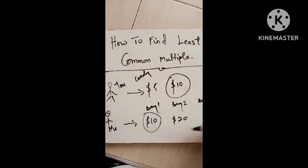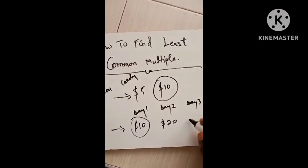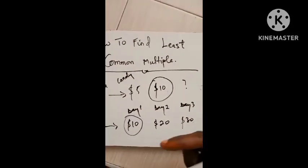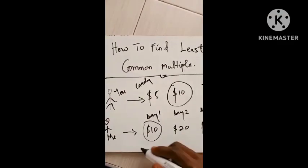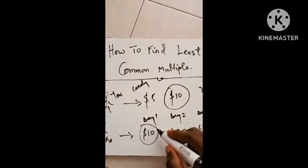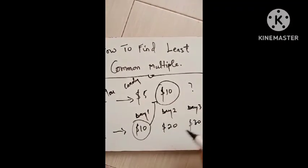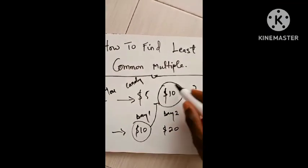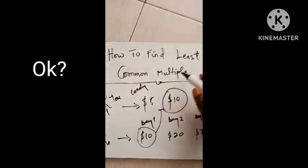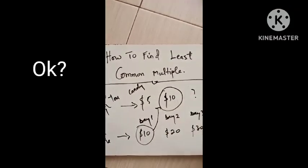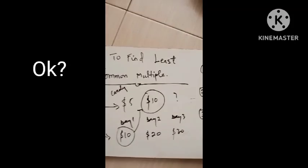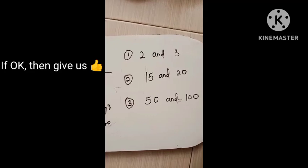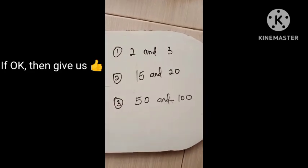If you keep on listing the amounts we are spending, for me day three is going to be thirty dollars. What do you think would be day three for you? Put it in the comment section below. You can see that you and I have something in common — ten dollars. The smallest value we share among our lists is what we call the least common multiple.